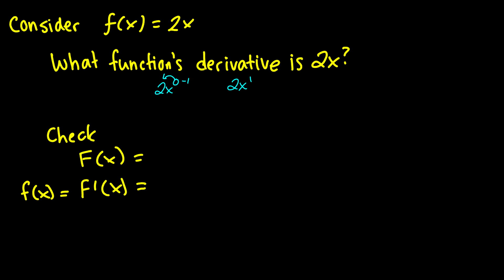This looks like it used to be x squared. Let's take F(x) to be x^2. Let's take its derivative. And it does, in fact, equal 2x. Therefore, its antiderivative is x squared.